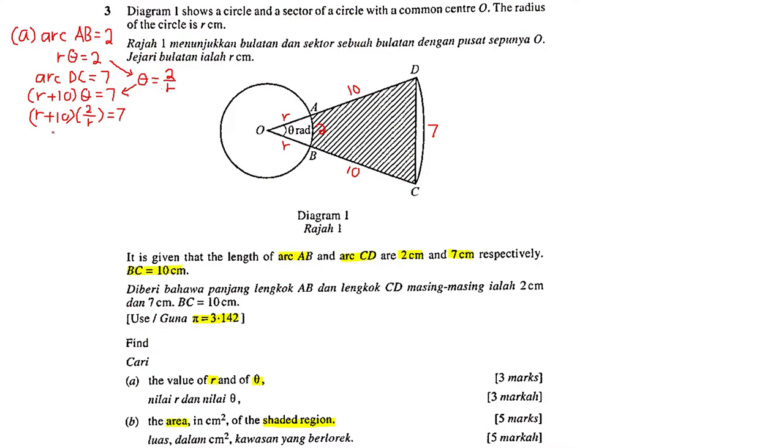I multiply the whole thing with R, so I get (R + 10) times 2 equals 7R. 2R + 20 equals 7R, so 5R equals 20, therefore R equals 4. I substitute it back here, so I will get theta equals 2 over 4, which is 1 over 2 radian, or we write it as 0.5.